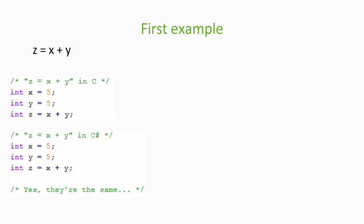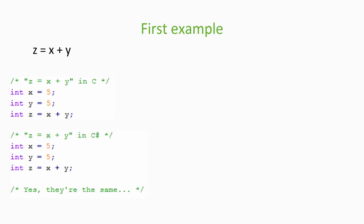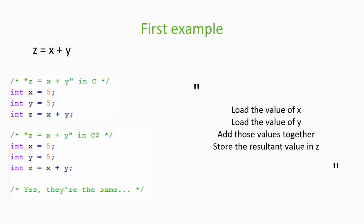As a human who understands maths, we find this very simple to understand. But what we have to do is break it down into atomic parts — that is, parts that can't be split up any further. These atomic parts are what a processor understands and can actually handle. Using our cliff analogy, we might imagine that to do this, a high-level developer shouts down: I want you to take the value of x, then I want you to take the value of y, add those together, then store that value in z.